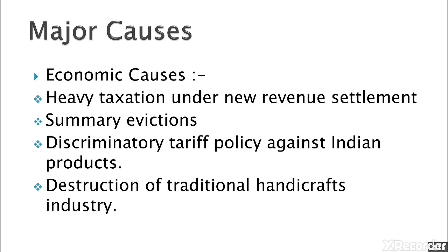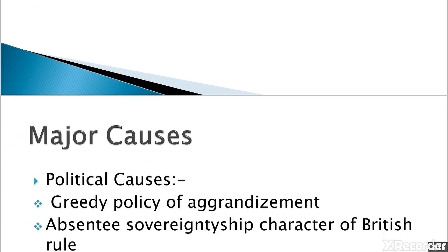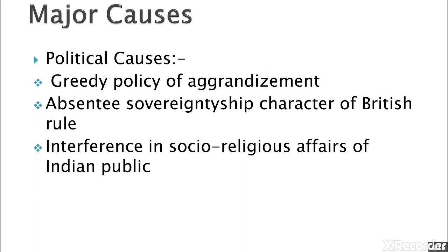Although India was a leader in export of silk and textiles, it ended because of the discriminatory tariff policy of the British. One-way free trade killed Indian manufacturers and increased the economic miseries of people. The ruin of Indian industry increased pressure on agriculture, and the land could not support all the people, resulting in lopsided development and pauperization of the country in general.